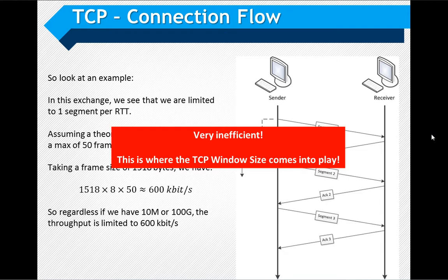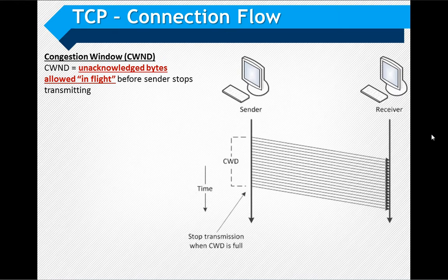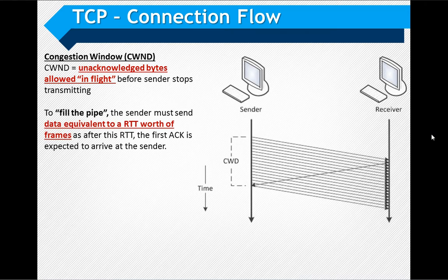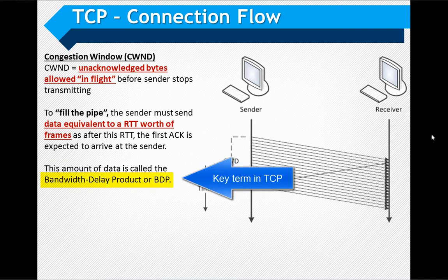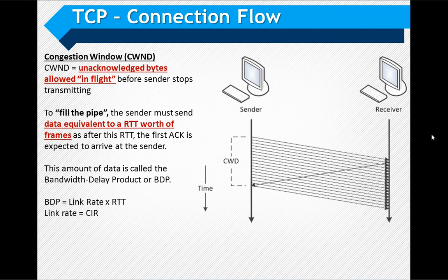This is where the famous TCP window size comes into play. The TCP window size is the maximum number of bytes that can be transmitted by the sender without being acknowledged by the receiver. Once the burst of data bytes equivalent to the window size has been sent, the sender waits to receive acknowledgement before resuming. To fill the pipe, the sender must send data equivalent to a round-trip time worth of frames. This amount of data is called the Bandwidth Delay Product, or BDP — which is the link rate, or CIR, multiplied by the round-trip time.